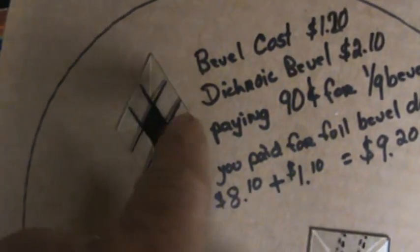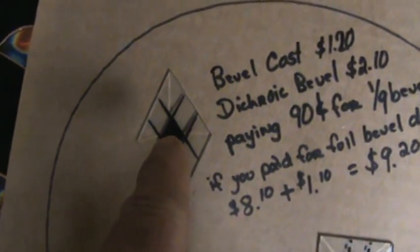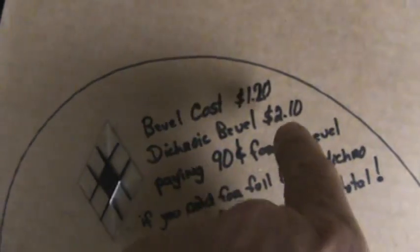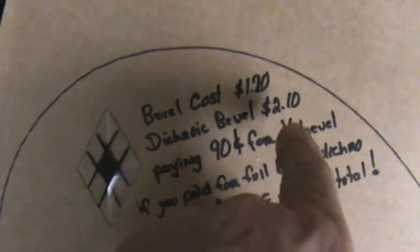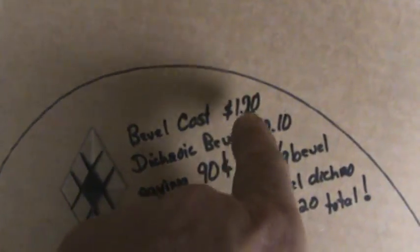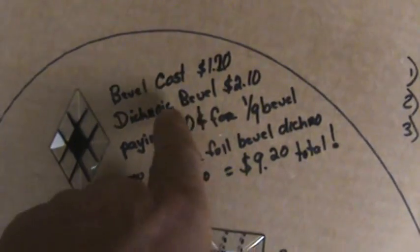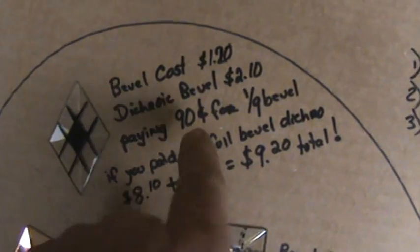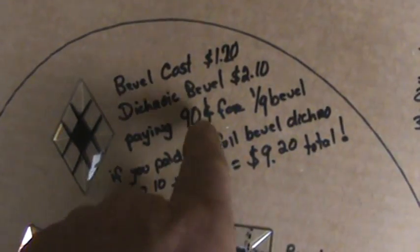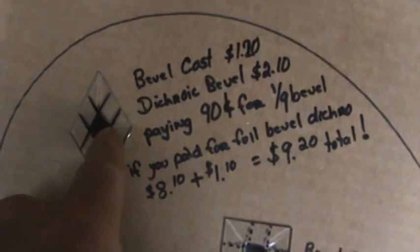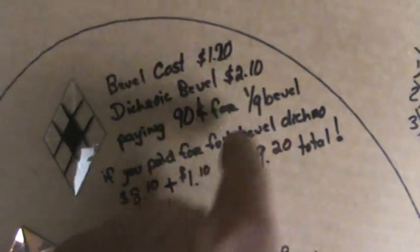So you can see here you're only getting one-ninth of the bevel. Well, this dichroic bevel is two dollars and ten cents on the internet. The bevel cost is approximately a dollar twenty, give or take, you're gonna find them on sale. If you deduct the bevel cost, the clear bevel, from the dichroic bevel you're paying ninety cents for this little spot which is one-ninth of the bevel.